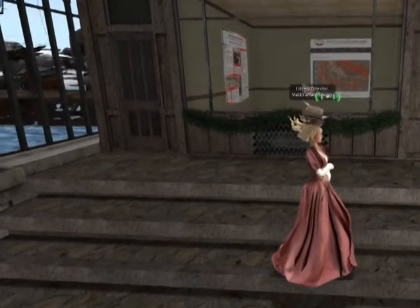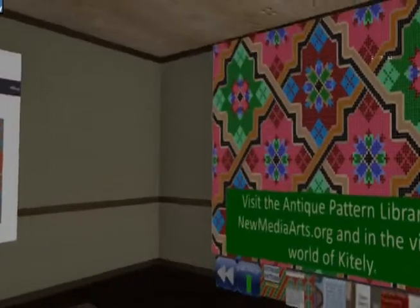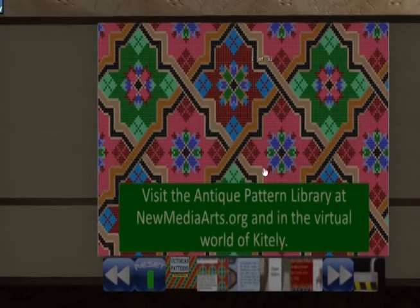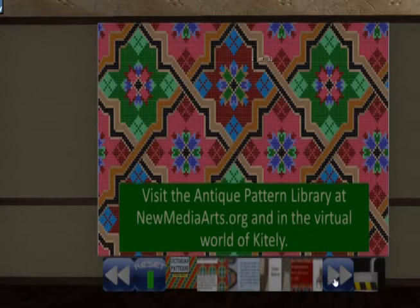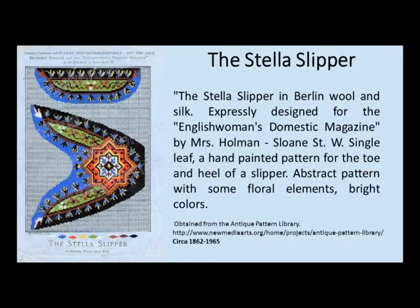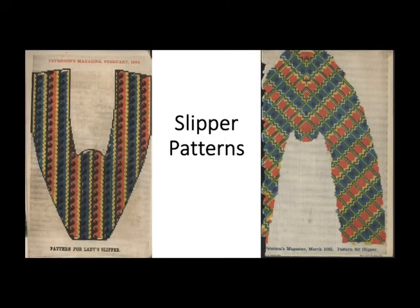You can also see that we've put some information here to our sister project, the Antique Pattern Library, which curates antique patterns from historical eras — manuscripts and patterns for the furnishings, the clothing — so that we can see what it really looked like in the Victorian era. As librarians, we really strive to help people understand how to find historical, accurate patterns, so it's a perfect partnership for simulations in virtual worlds.